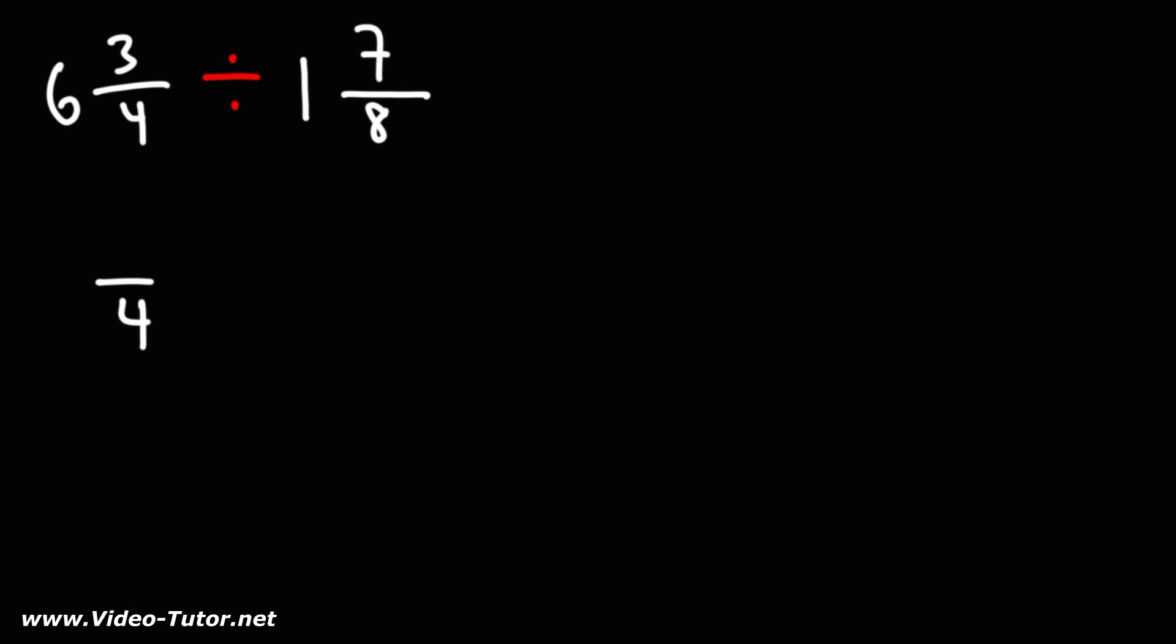Let's rewrite the denominator. Next, we'll multiply the whole number by the denominator and then add the numerator. 6 times 4 is 24 plus 3, that's 27.